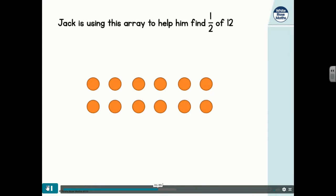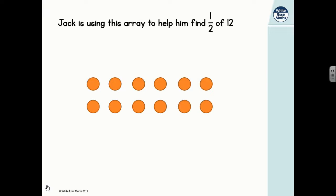Here, Jack is using an array to help him find half of 12. Arrays are brilliant, aren't they? He, very cleverly, draws a line horizontally down the middle of his array. We can now clearly see the top half of his array has six counters and the bottom half of his array has six counters, two equal groups of six.